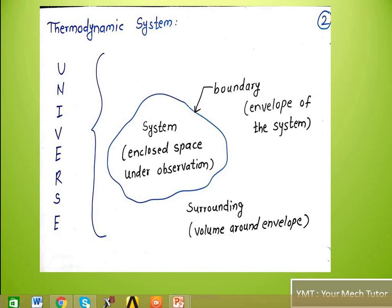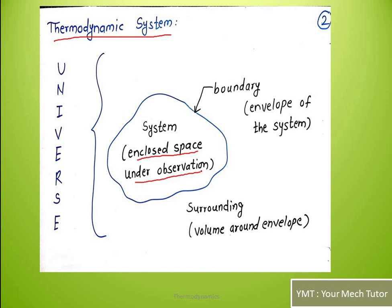Let us discuss thermodynamic systems. A thermodynamic system is an enclosed space which is under observation. For example, if you want to find out the temperature of the room you are sitting in, your room is an enclosed space — that is our system. The walls of the room can be considered as the boundary, which is the envelope of the system. Outside the wall is the surrounding, which is the volume around the boundary.